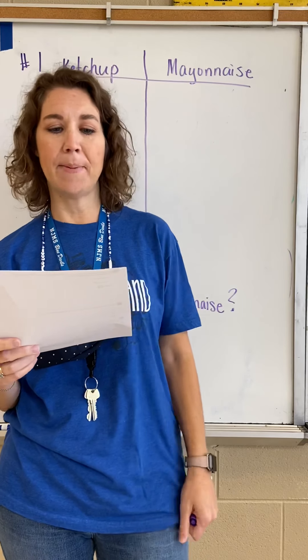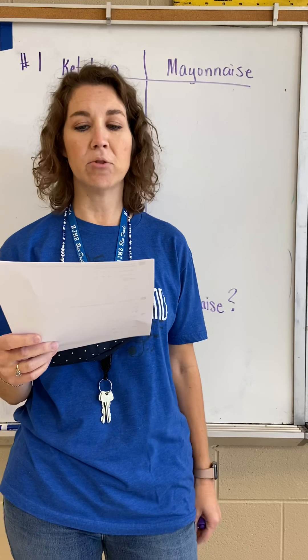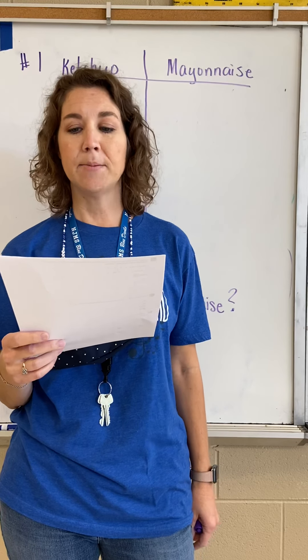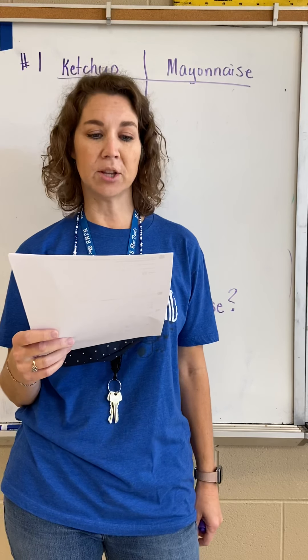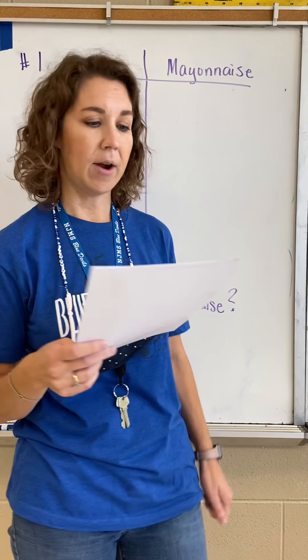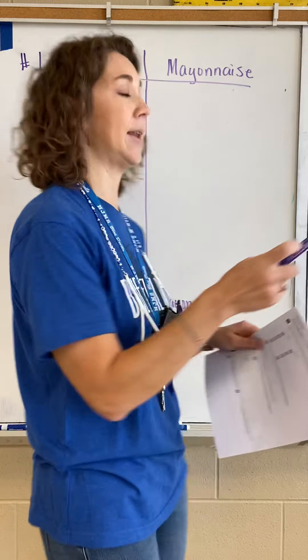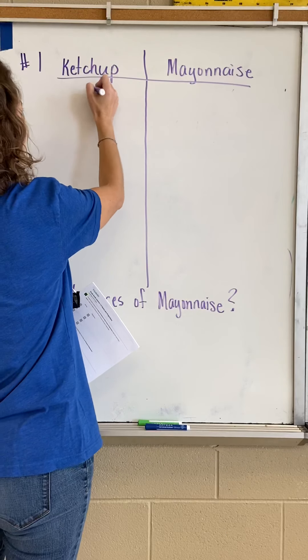Number one says the Beefy Burger restaurant uses five ounces of ketchup for every three ounces of mayonnaise to make their special sauce. Part A says to create a ratio table to represent the ratio of ounces of ketchup to mayonnaise. So it says five ounces of ketchup to three ounces of mayonnaise and we simply put that in the chart.